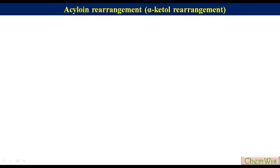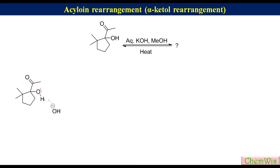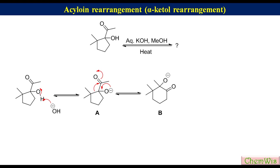The second example is the rearrangement of 1-hydroxy-2,2-dimethylcyclopentyl ethanone under basic conditions. Migration of the alkyl group from the alpha carbon in species A to the keto group produces species B, which after protonation produces the rearranged six-membered ring product.